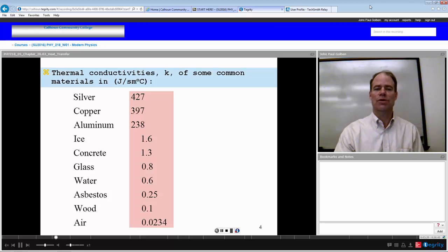Silver, 427. Copper, 397. Aluminum, 238. These are very good thermal conductors, most likely because they are very good electrical conductors. They have free electrons that can transfer the energy easily.